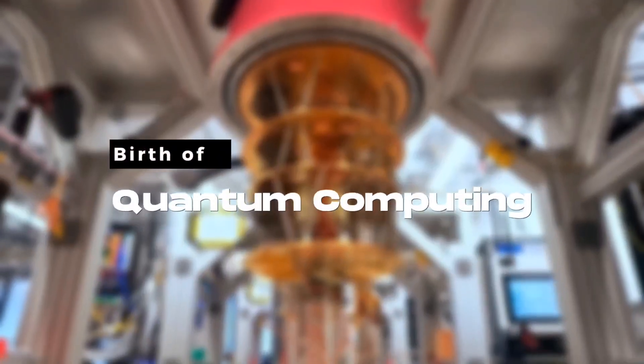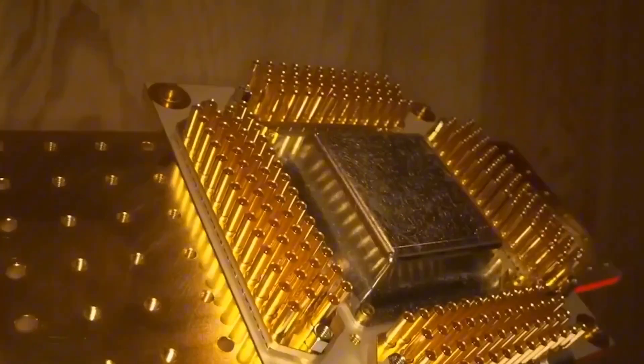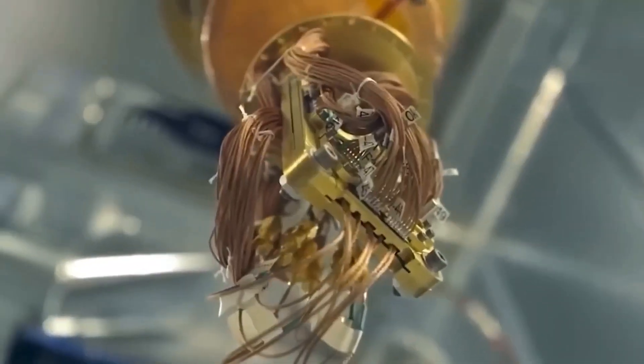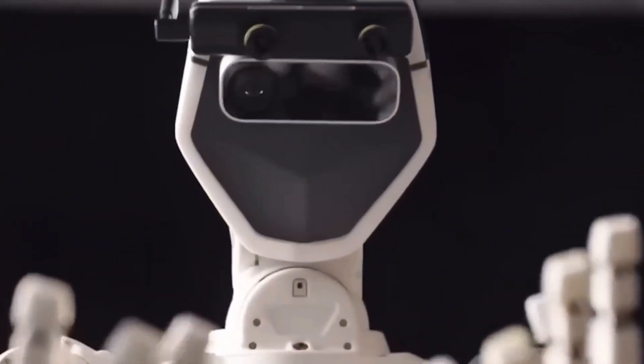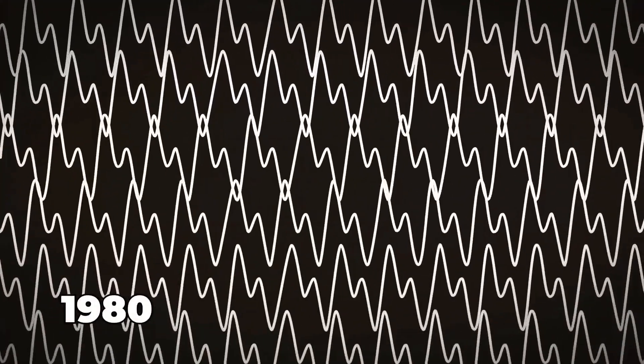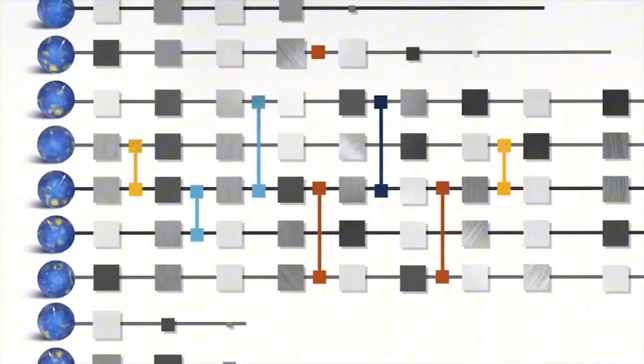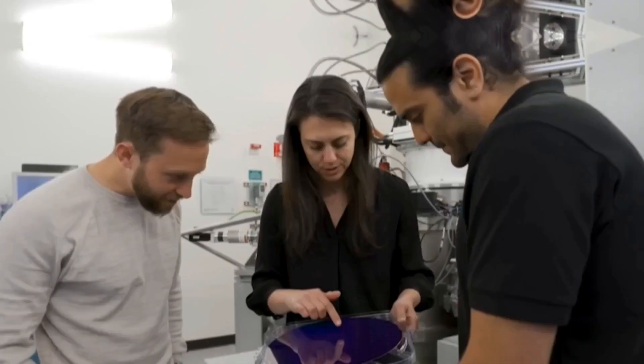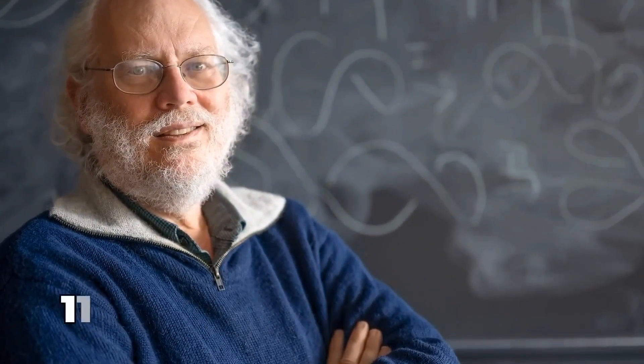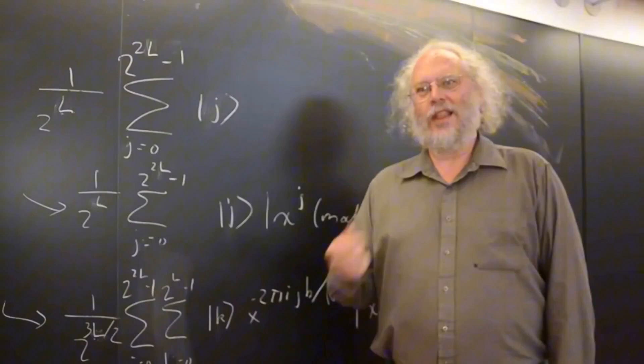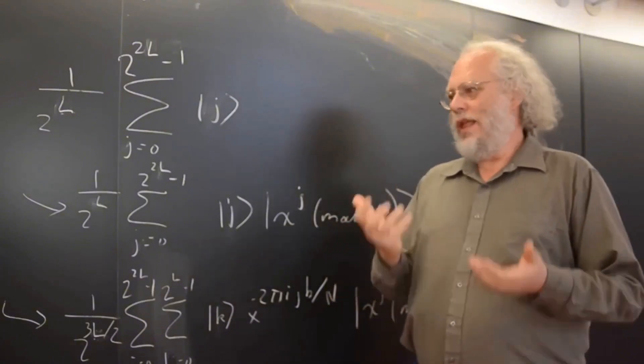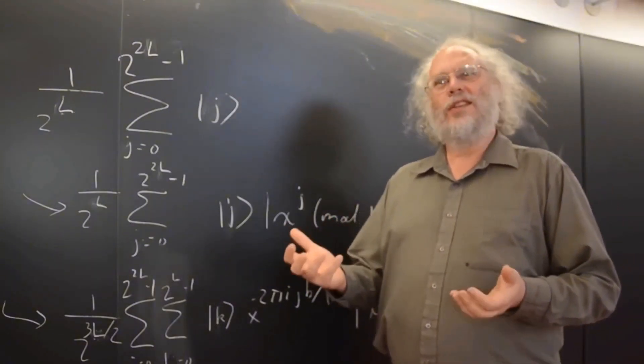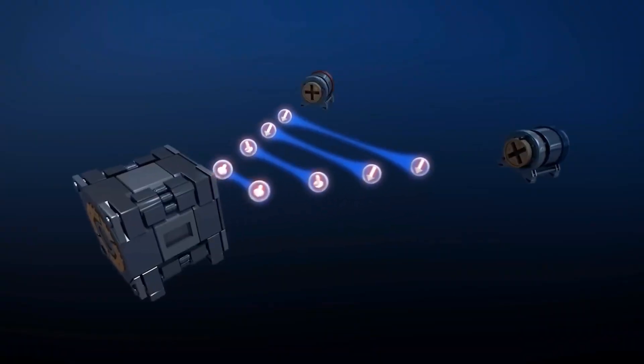As amazing as this technology is, its concept has been in existence for over a century. The journey into quantum computing began in the early 1980s, when physicists and computer scientists envisioned the potential for quantum mechanics to revolutionize computation. Pioneering works by Richard Feynman and David Deutsch laid the theoretical groundwork. In 1994, Peter Shor developed the groundbreaking Shor's algorithm, which demonstrated the capability of quantum computers to factorize large numbers exponentially faster than classical algorithms.